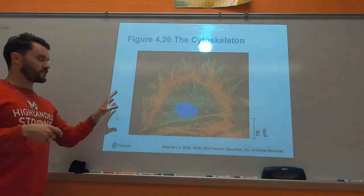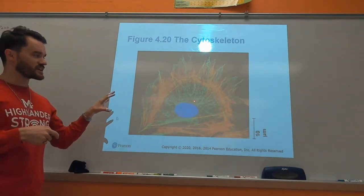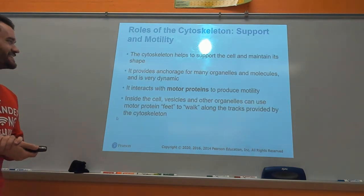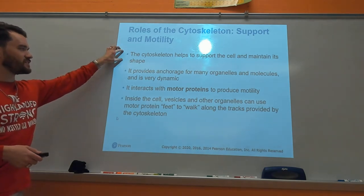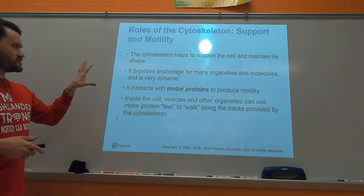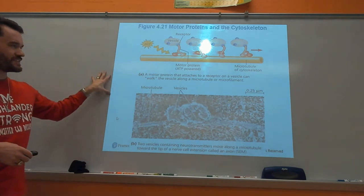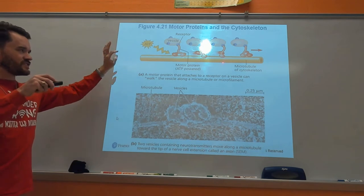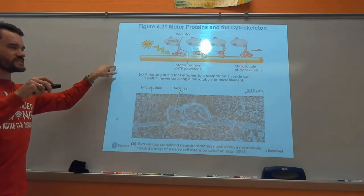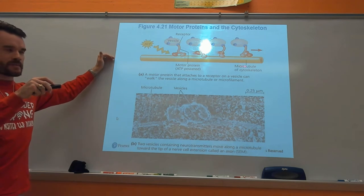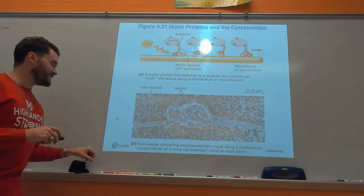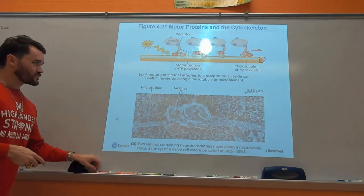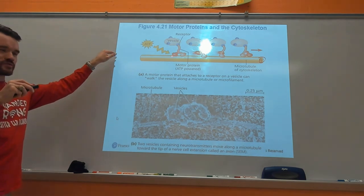Here's a cool fluorescent micrograph of the cytoskeleton. The cytoskeleton gives support and shape to the cell, and anchorage for different organelles and molecules. Here's a picture showing that. There are three different parts of the cytoskeleton. One of the types of fibers is called a microtubule - it looks like a hollow tube. On the microtubule, you can have things called motor proteins.